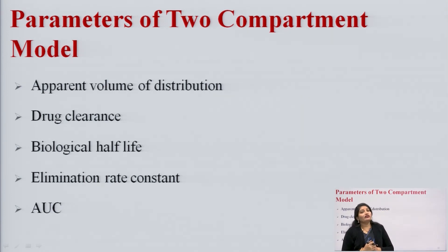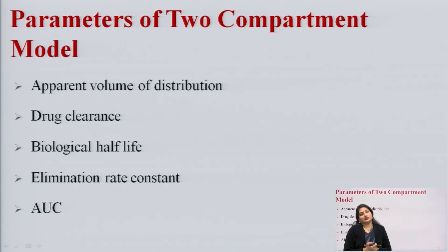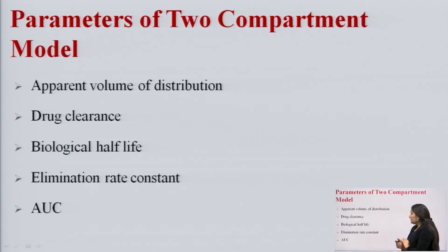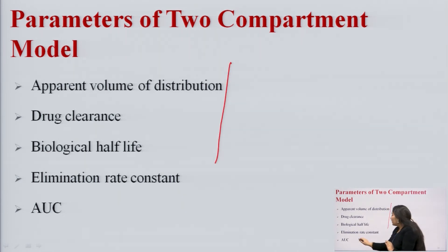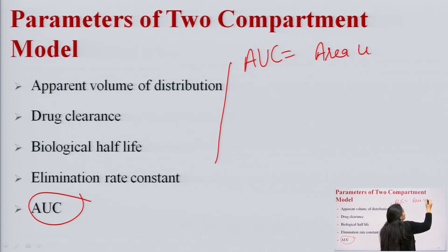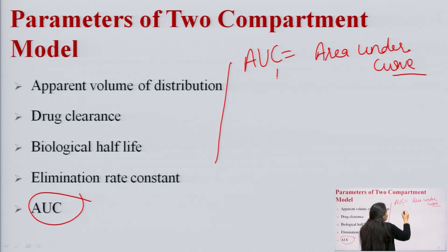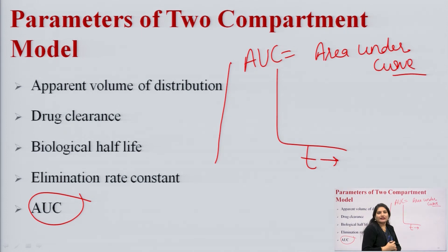From the two compartment model we can calculate several pharmacokinetic parameters: apparent volume of distribution, drug clearance, biological half-life, elimination rate constant, and AUC. AUC stands for area under the curve — specifically the curve plotted between plasma drug concentration on the y-axis and time on the x-axis.